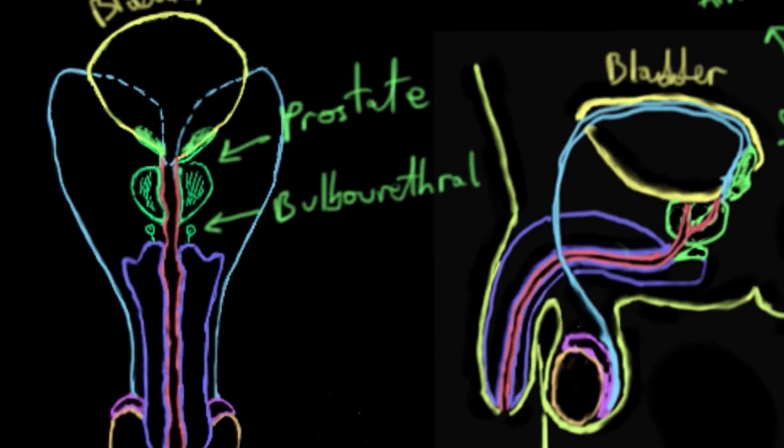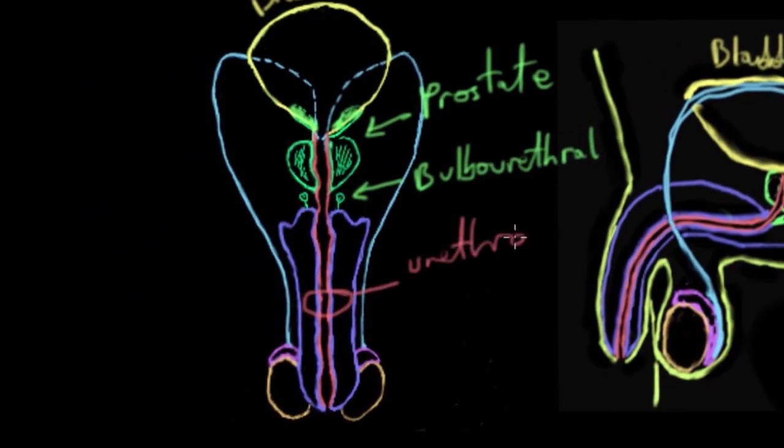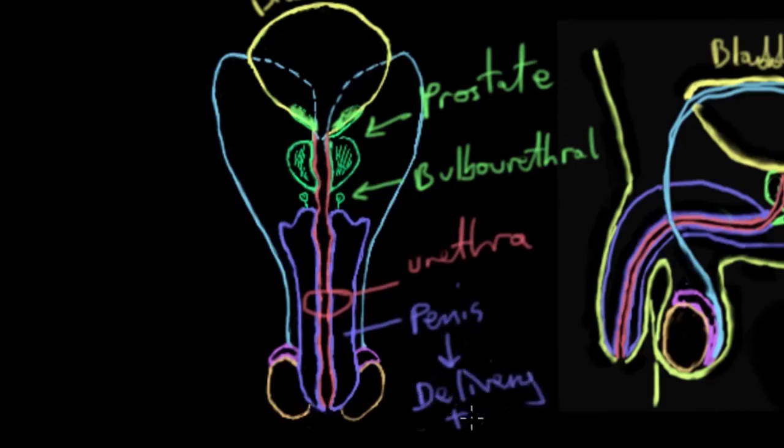Now semen actually travels through a tube called the urethra, which you can see here in red, to get to the outside of the body. It travels through the urethra through the penis, which is here in purple blue. In reproduction, the role of the penis is to actually penetrate the vagina so that sperm can be deposited inside.